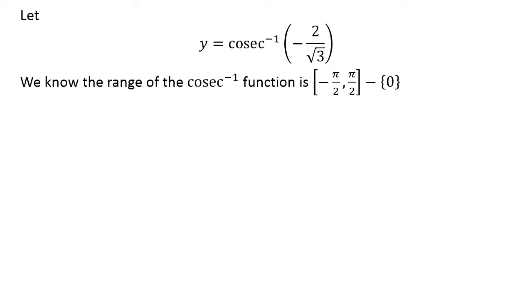Now, we know the range of the inverse cosecant function is the closed interval of minus half pi and half pi, except 0.